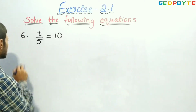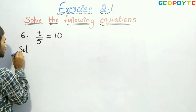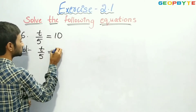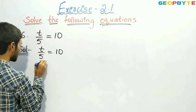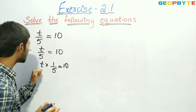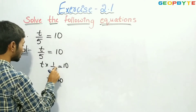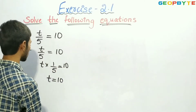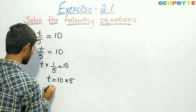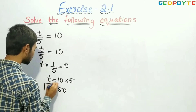Now let us see the sixth question: t by 5 is equal to 10. Let us find the solution. The given equation is t by 5 is equal to 10. t by 5 can also be written as t into 1 by 5, equal to 10. Here we need to find the value of t. If we transpose 1 by 5 to the right-hand side, it will become reciprocal. So, reciprocal of 1 by 5 is 5. Therefore, t is equal to 10 into 5, which is 50.